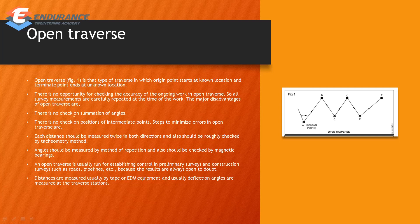To check the accuracy of open traverse and avoid errors, you can use the repetition method — surveying by a repeated method. You can also check the angles and the intermediate points for verification.